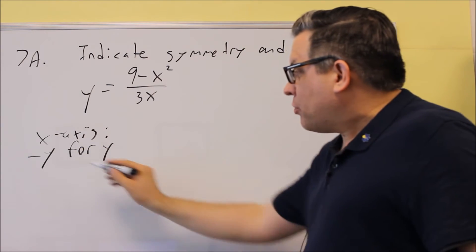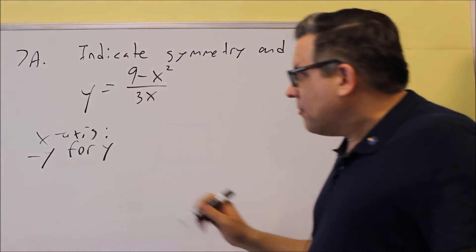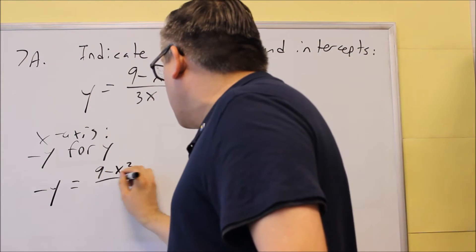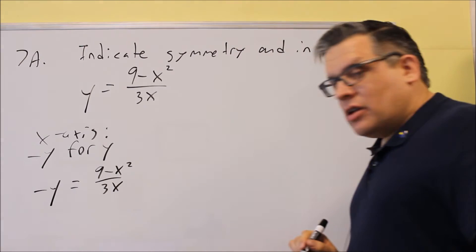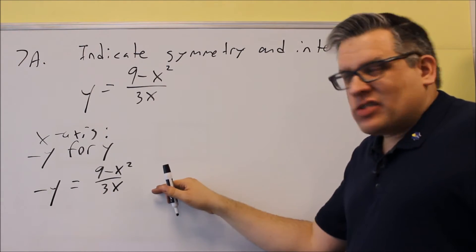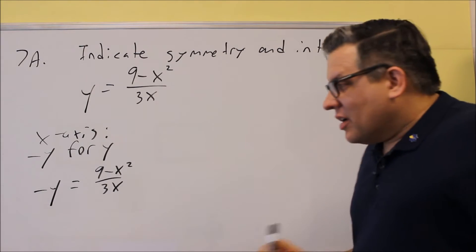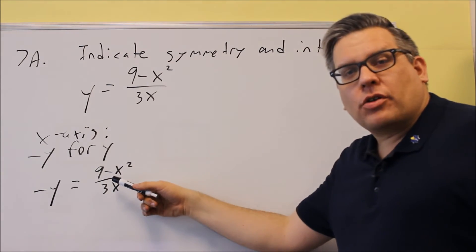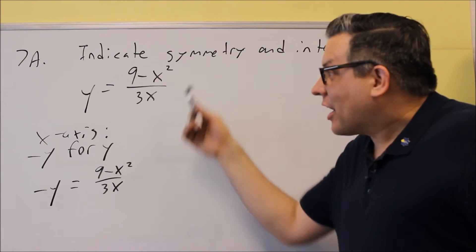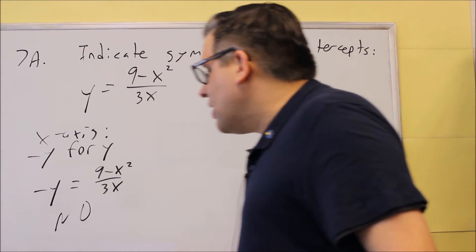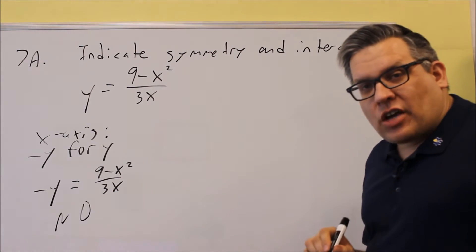So let's try that for this one, we're going to put a negative y in for the y. You get -y = (9 - x²)/(3x). Now there's nothing that I can do to make this look exactly like the original one. Even if I multiply both sides by a negative, then the negative is going to end up on the right hand side, and it's not going to make that the same as the original one. And so this one, it's no, doesn't have x-axis symmetry.